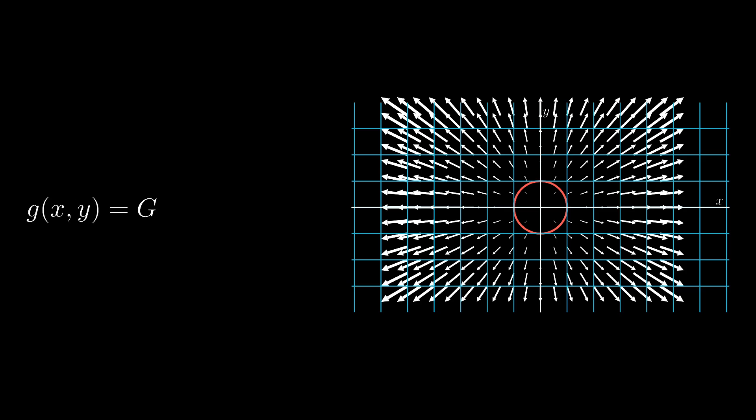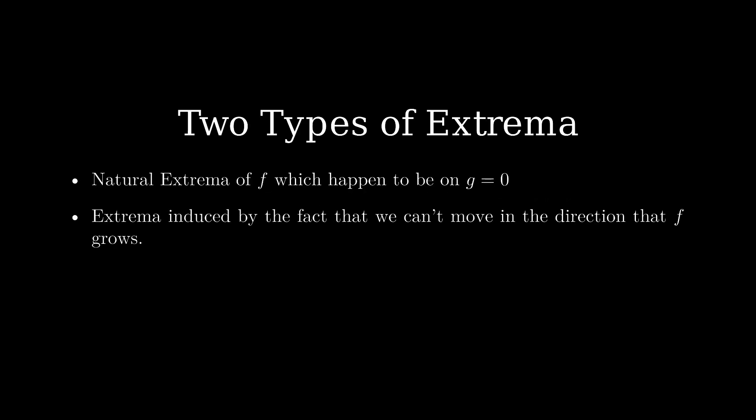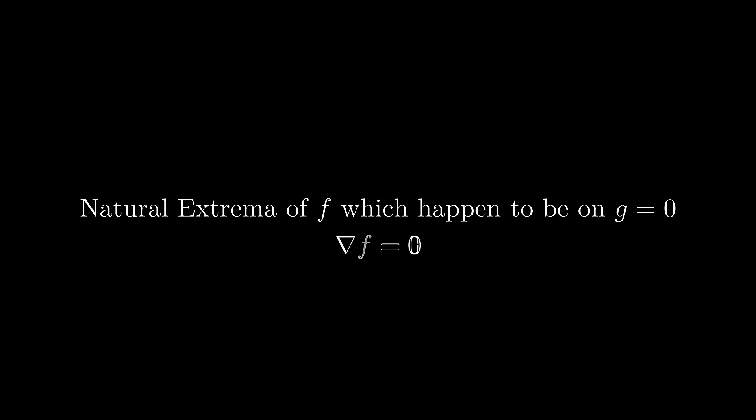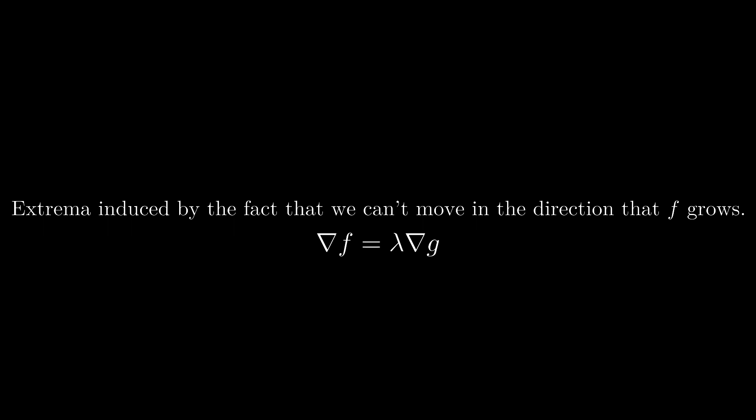This is useful because it means the gradient field of g is precisely the directions we cannot go when searching the input space if we want to keep g equal to some value, for instance 0. Now, let's think about what kinds of extrema we can have for f when optimizing along one of these contour lines of g. We really have two kinds: local honest-to-goodness extrema of f that just happen to be on the contour g equals 0, and induced extrema on f that only exist because we're not allowed to go in the direction that f is growing. For the second kind, it occurs when the gradient of f is pointing in the same direction as the gradient of g.